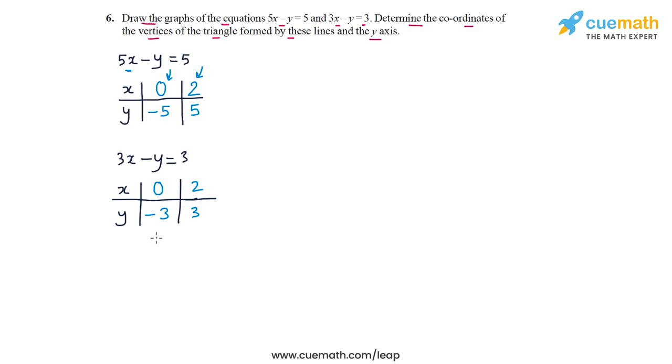So two solutions, two points that will lie on the second line are 0, minus 3 and 2, 3. Now let's plot the lines corresponding to these two equations.